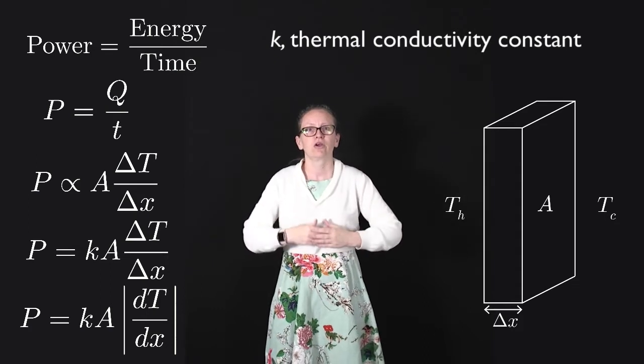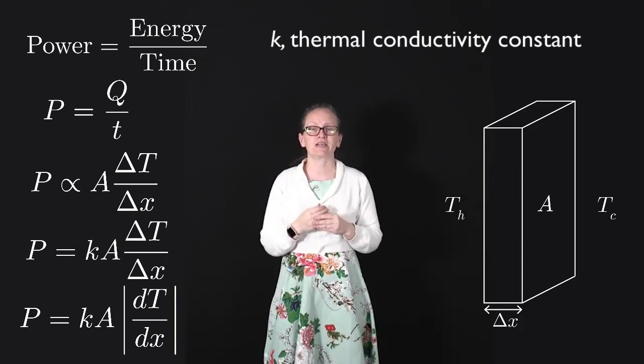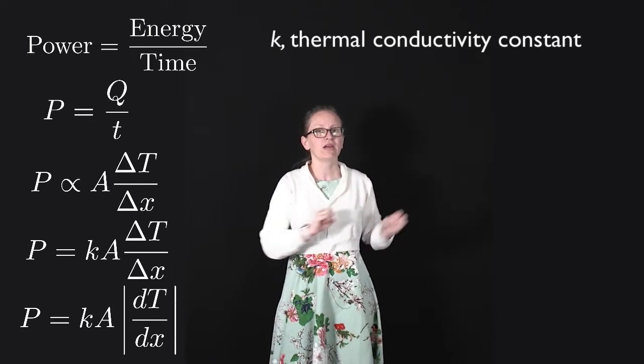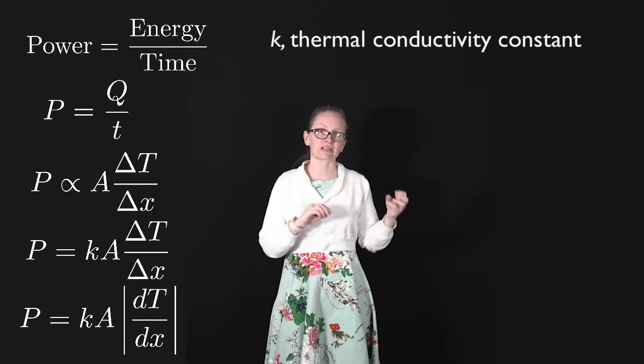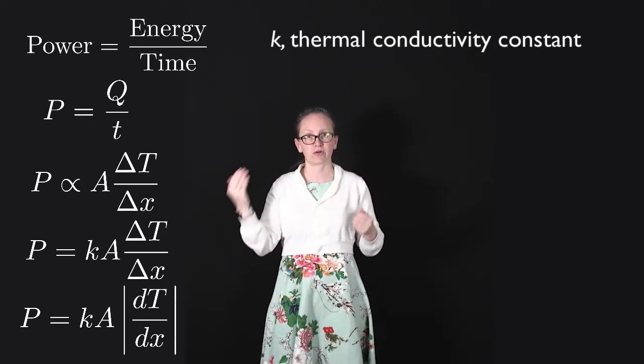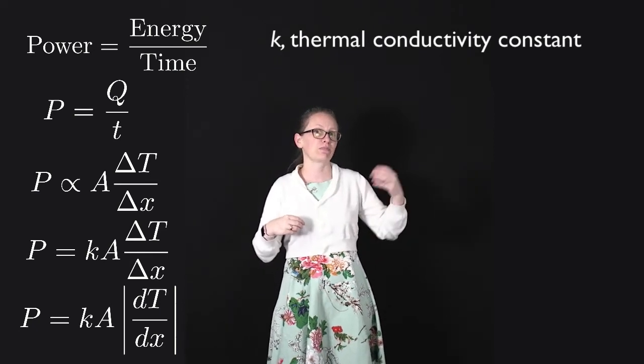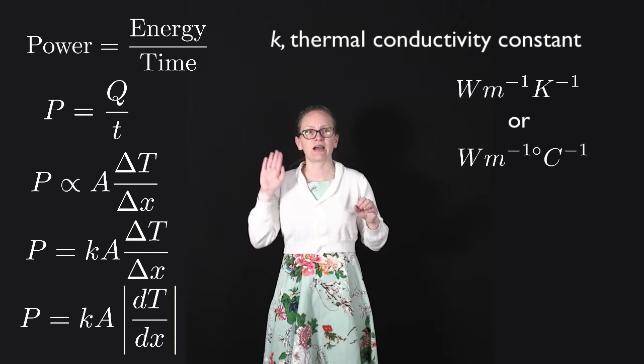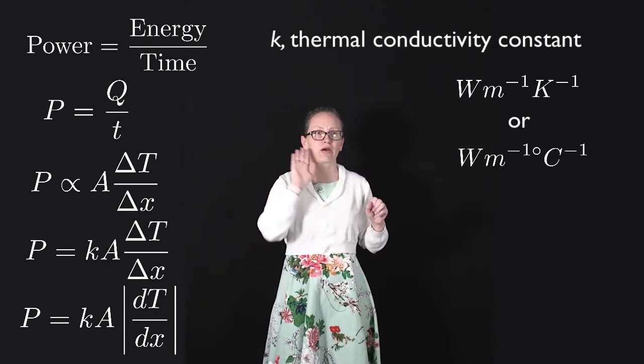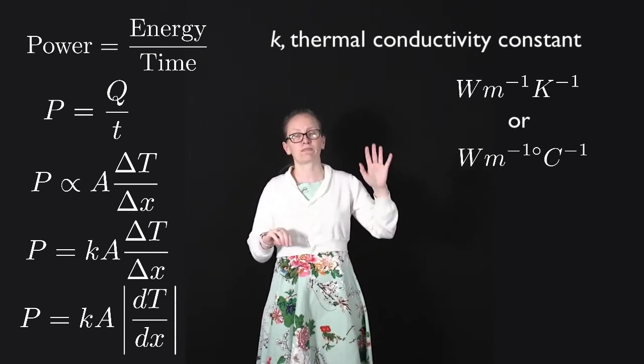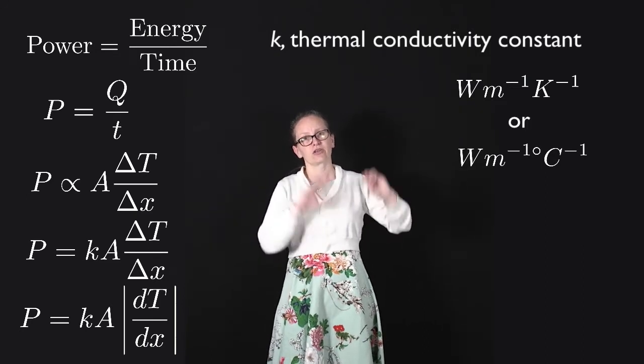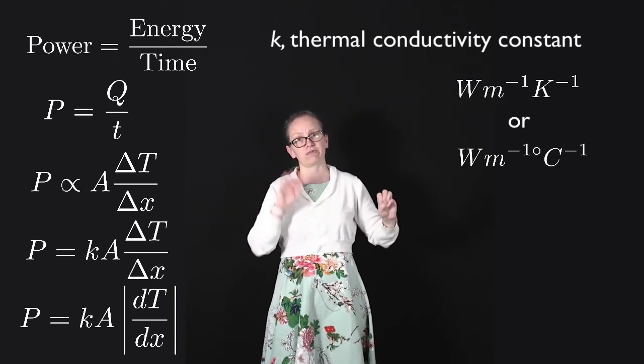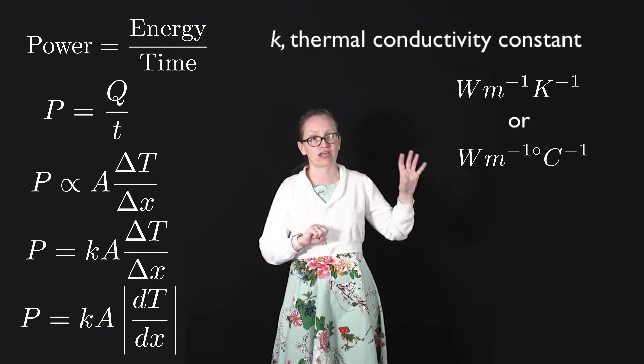So the thermal conductivity constant K depends upon the material. Materials which are good conductors of heat have a much higher thermal conductivity than materials which are poor conductors of heat. The units for the thermal conductivity are watts per meter per Kelvin or equivalently watts per meter per degrees C. These units are the same because a change of 1 Kelvin is the same as a change of 1 degrees C.